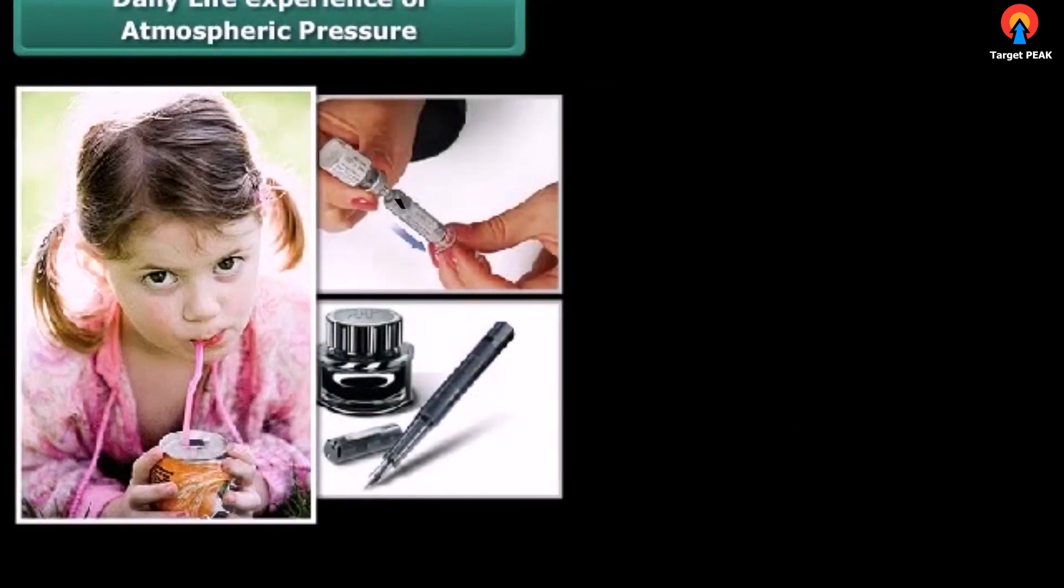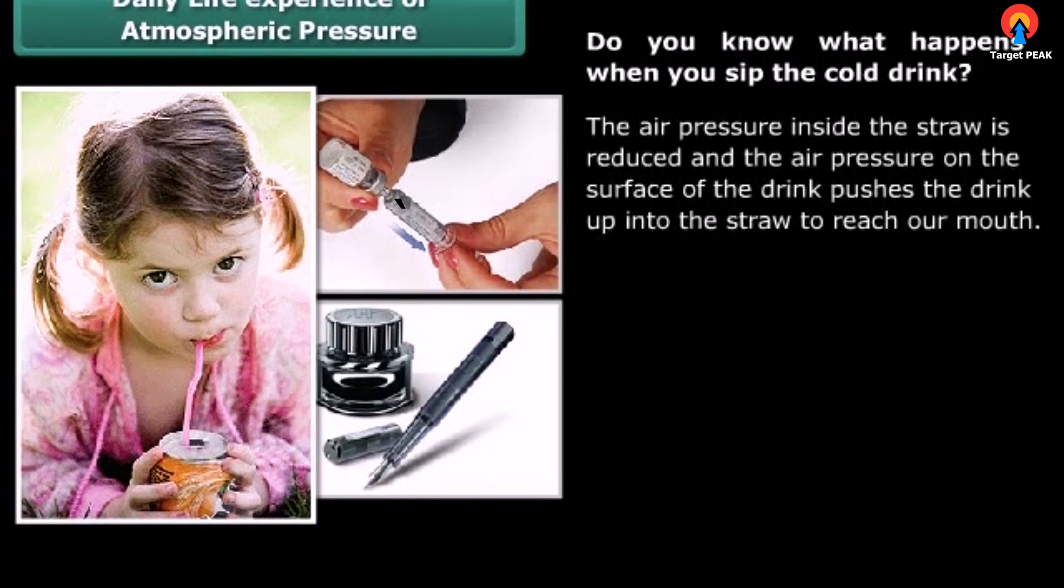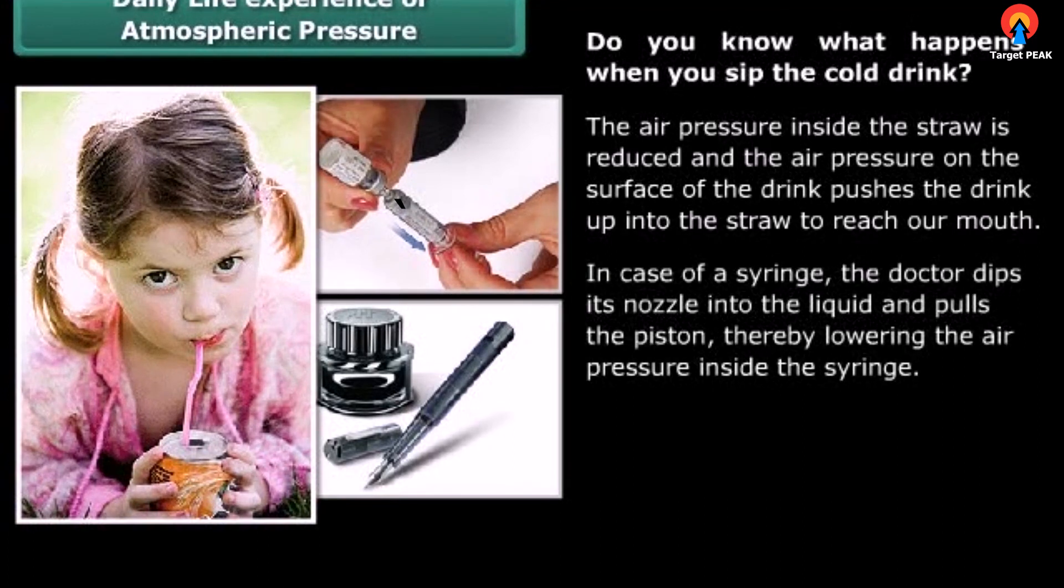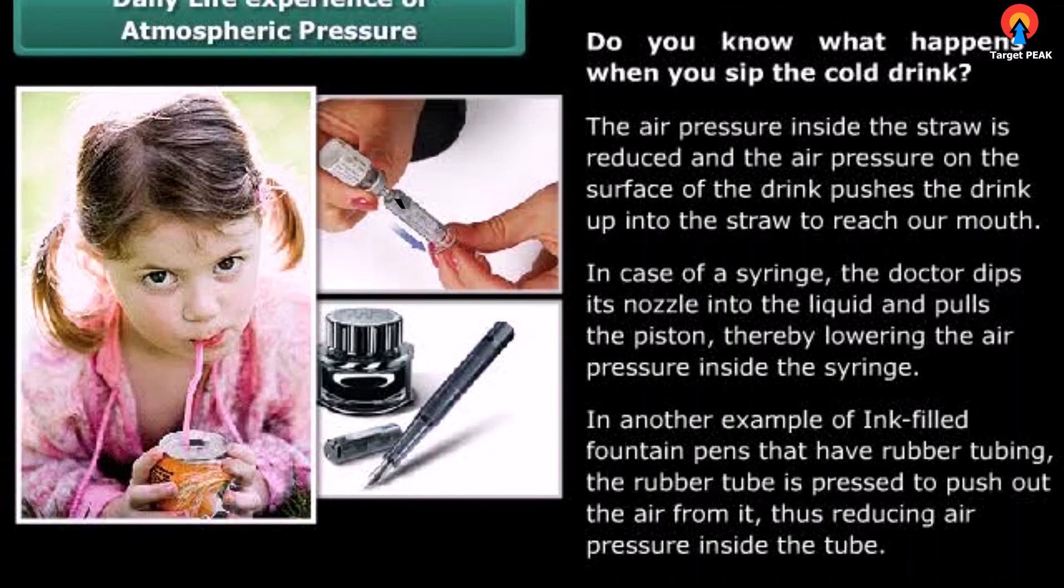In our day-to-day activities, we experience various instances of atmospheric pressure. Some common examples are: sipping cold drink through a straw, dipping the nozzle of the syringe in the liquid, or filling of ink in fountain pens. When you sip the cold drink, the air pressure inside the straw is reduced and the air pressure on the surface of the drink pushes the drink up into the straw to reach our mouth. In case of a syringe, the doctor dips its nozzle into the liquid and pulls the piston, thereby lowering the air pressure inside the syringe. Another example of ink-filled fountain pens that have rubber tubing: the rubber tube is pressed to push out the air from it, thus reducing air pressure inside the tube.